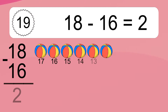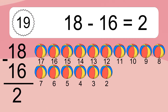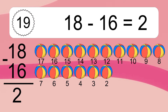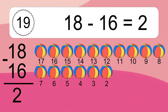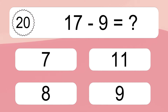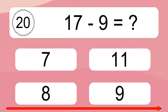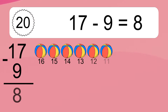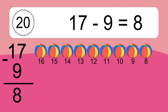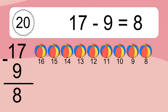18 minus 16 equals what? 18 minus 16 equals 2. Let's count it: 17, 16, 15, 14, 13, 12, 11, 10, 9, 8, 7, 6, 5, 4, 3, 2. 17 minus 9 equals what? 17 minus 9 equals 8. Let's count it: 16, 15, 14, 13, 12, 11, 10, 9, 8.